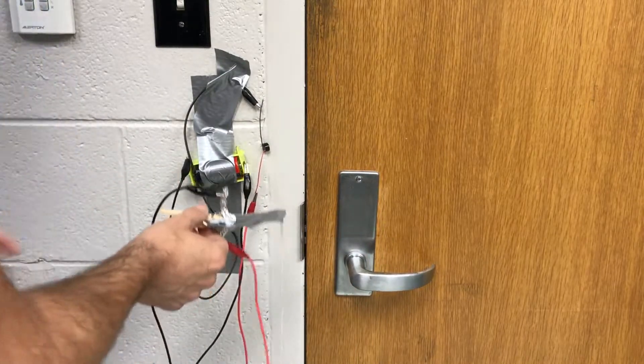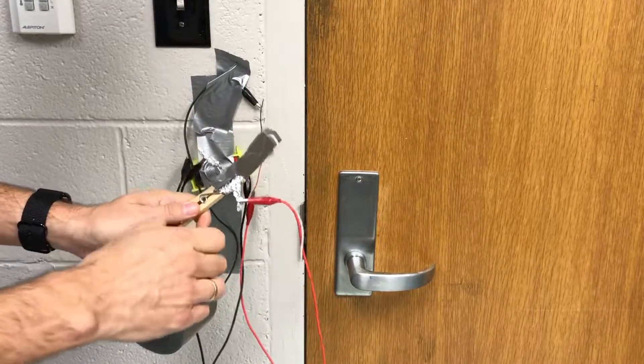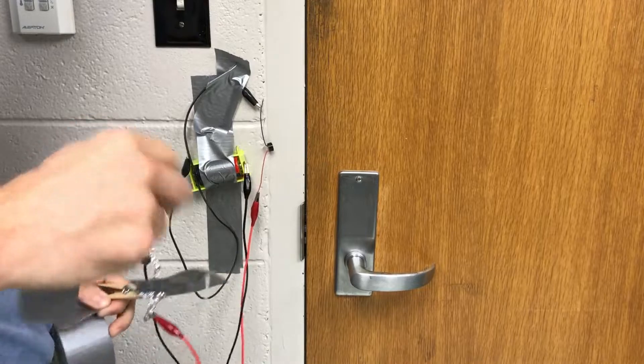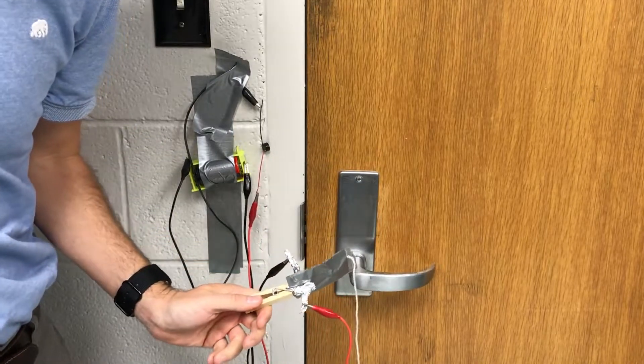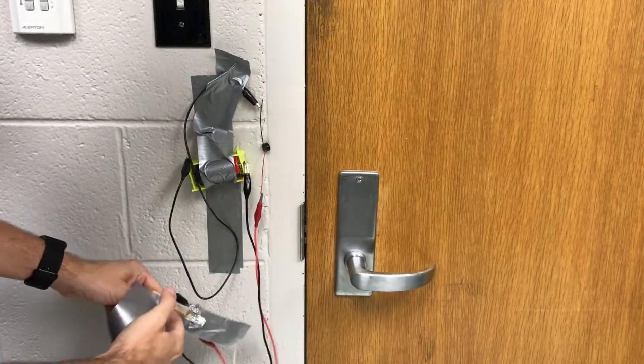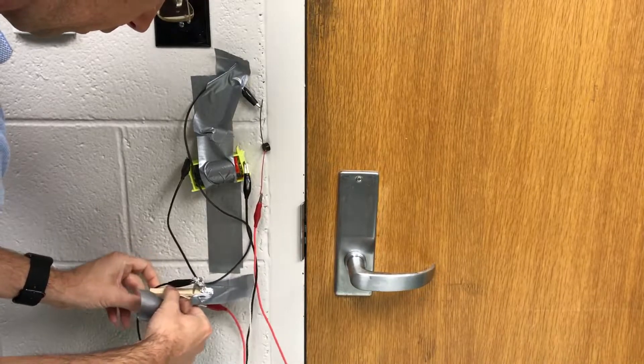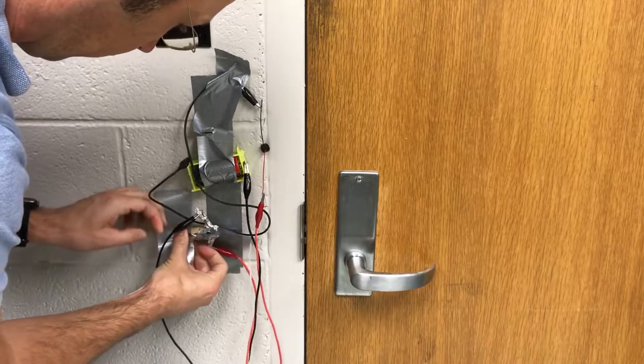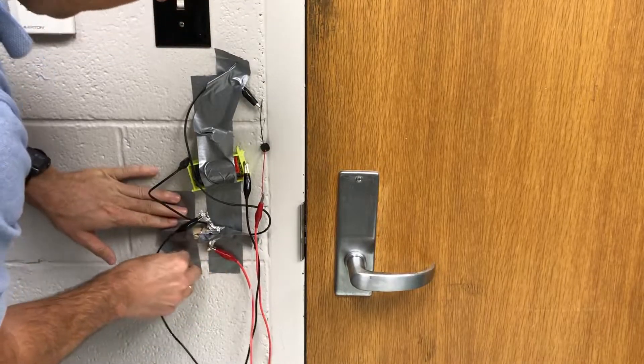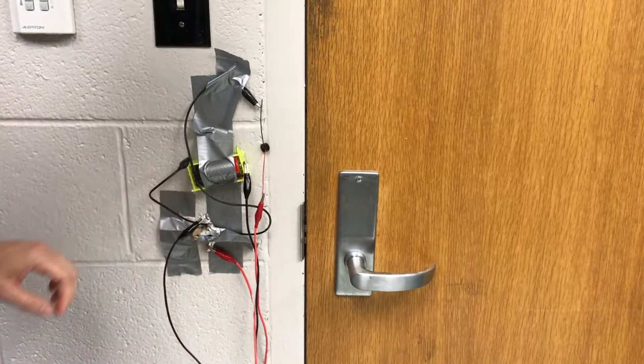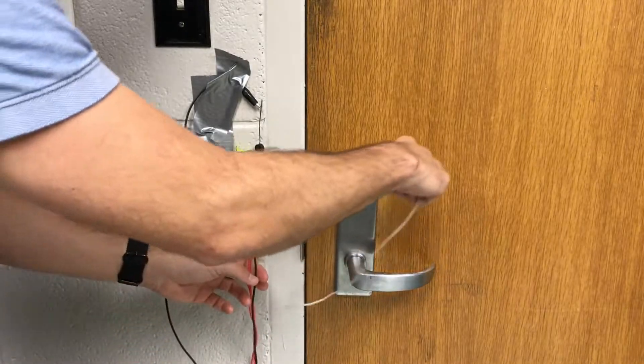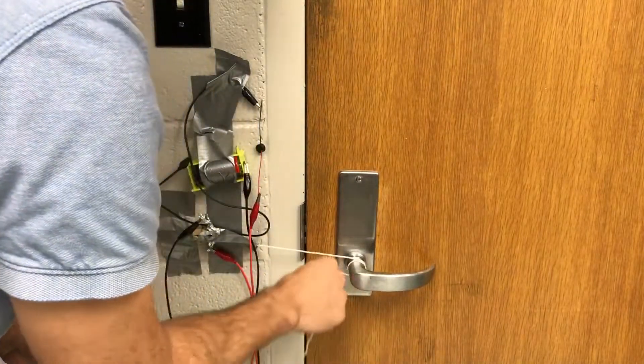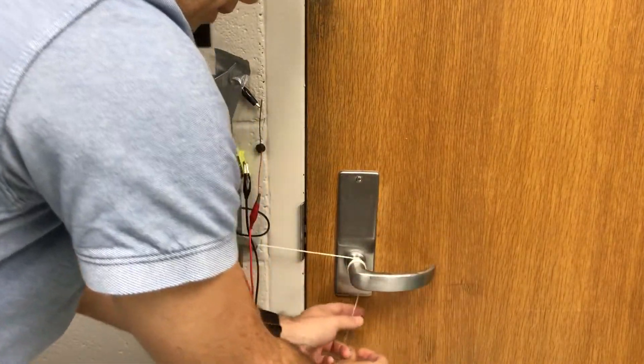I need some more duct tape. I'm going to tape this right down here. Now I'm going to take my string and wrap it around the door. You want this tight.